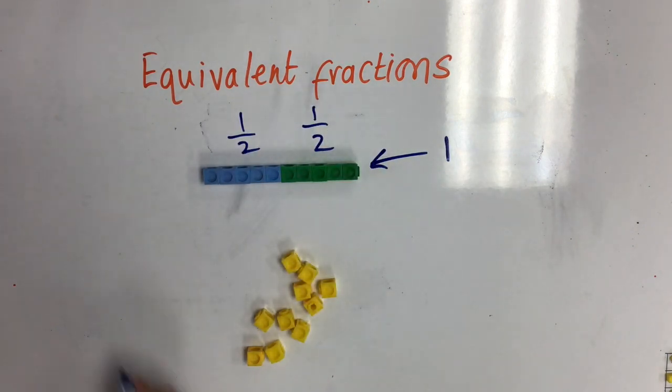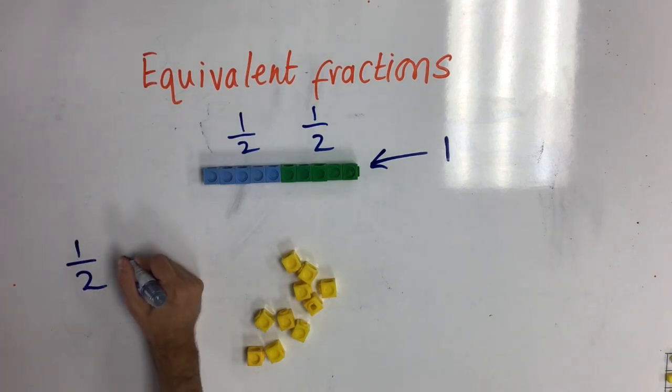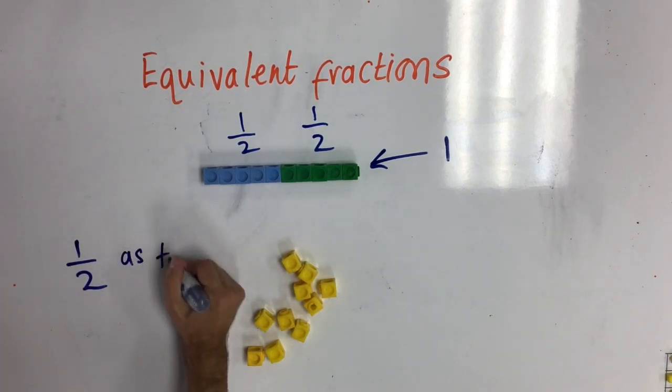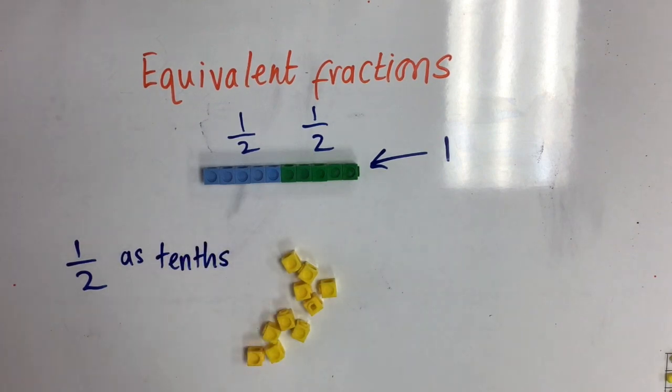But can I think about half as though it's tenths, and find out how many tenths are equivalent to my one half? I can do that by splitting up my one into tenths. That means I need to have ten equal parts.